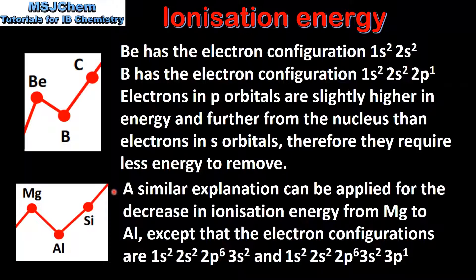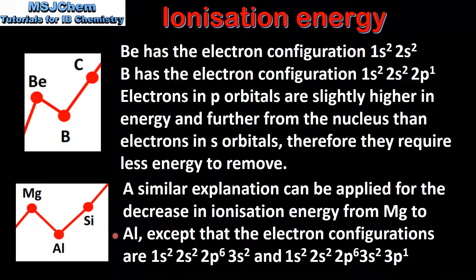A similar explanation can be applied for the decrease in ionization energy from magnesium to aluminium, except that the electron configurations are 1s2, 2s2, 2p6, 3s2 for magnesium and 1s2, 2s2, 2p6, 3s2, 3p1 for aluminium. Electrons in a 3p orbital are further away from the nucleus and higher in energy than electrons in a 3s orbital, therefore they require less energy to remove.